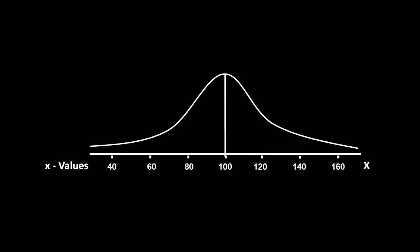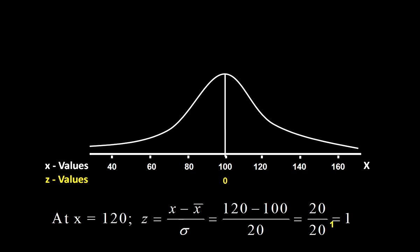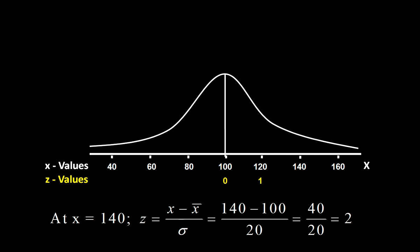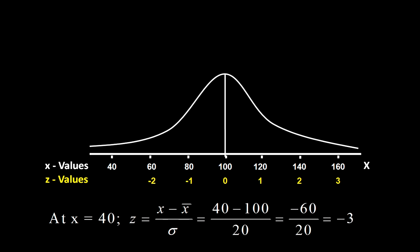Now we shall convert the X values and show the Z values just below the X values. Starting with the mean: at X equal to 100, Z equals 0. At X equal to 120, Z equals 1. At X equal to 140, Z equals 2. At X equal to 160, Z equals 3. At X equal to 80, Z equals minus 1. At X equal to 60, Z equals minus 2. At X equal to 40, Z equals minus 3.